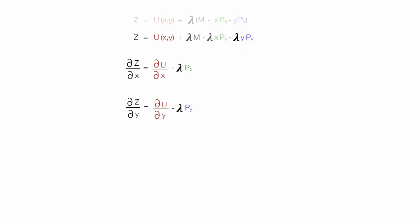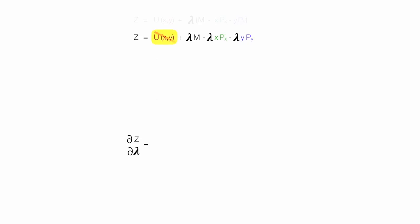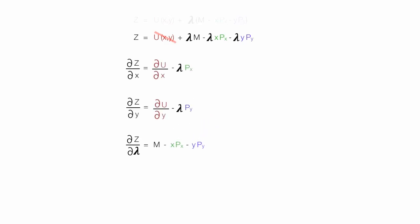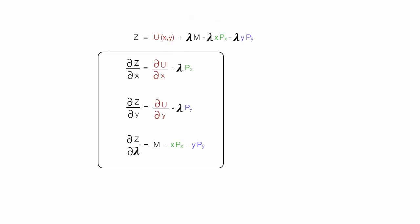There's one more to do. The partial derivative with respect to lambda: there's no lambda term in the first part, so I ignore that. The derivative of each lambda term is 1, and I'm left with m minus x times p of x minus y times p of y. Now I have three equations. I'm going to set all three equal to zero, because when we're trying to maximize or minimize, we set it equal to zero.